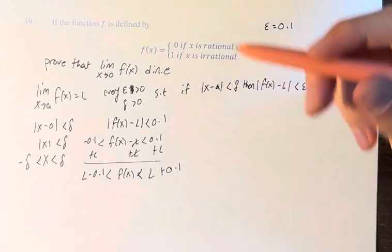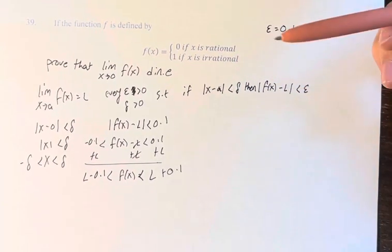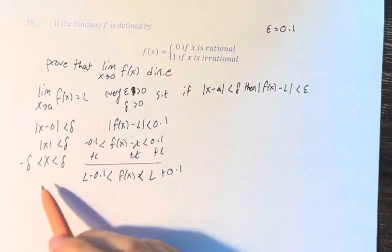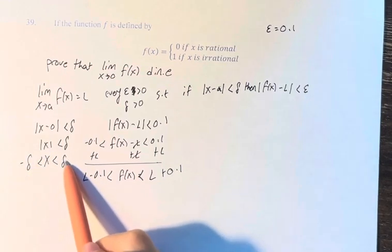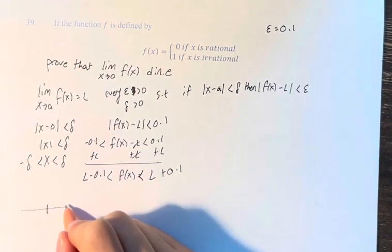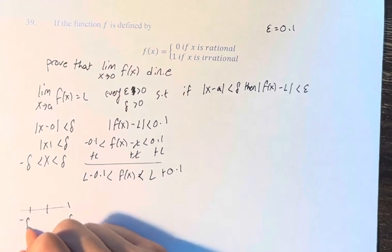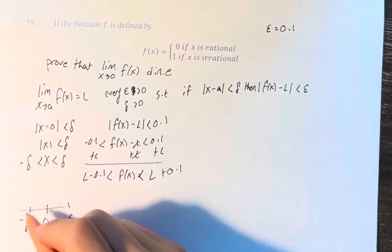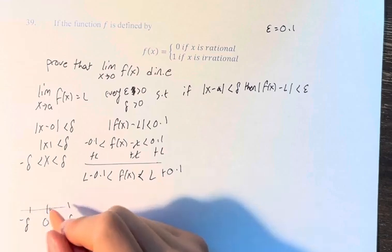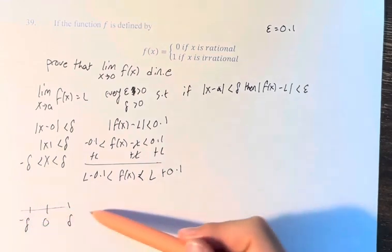If we are saying that we are within some distance delta of 0, right, because if we're between delta and negative delta, and this is 0, right, this is the range of values on the x-axis that we're dealing with.